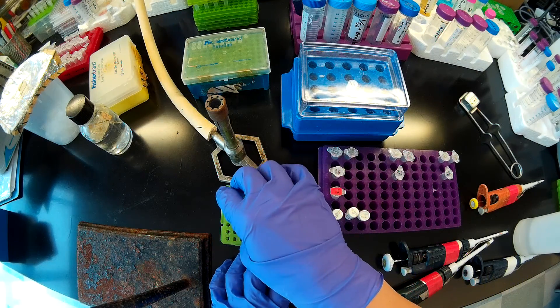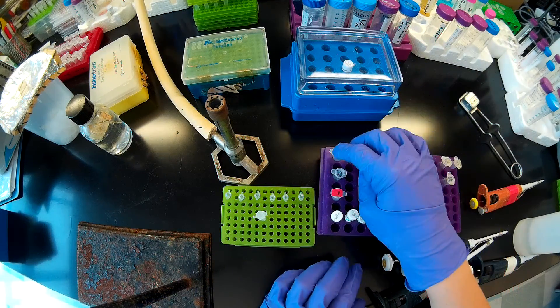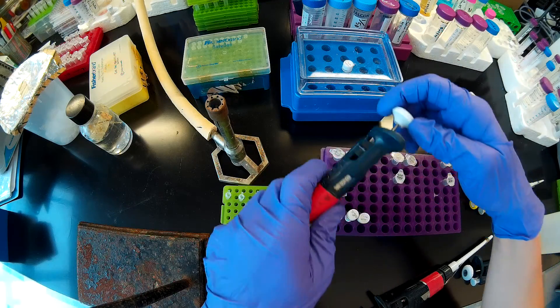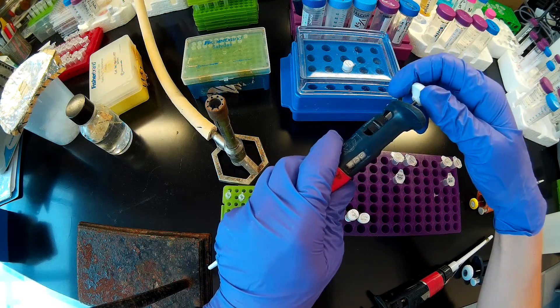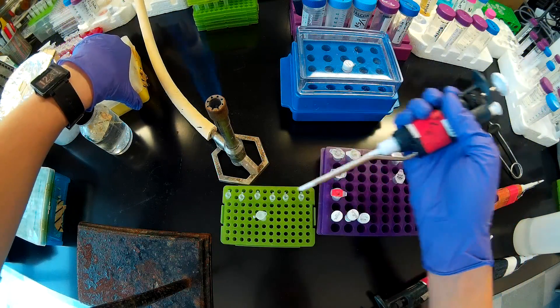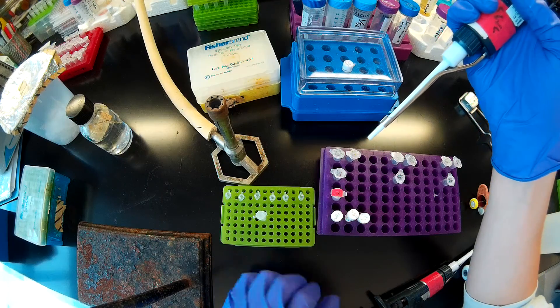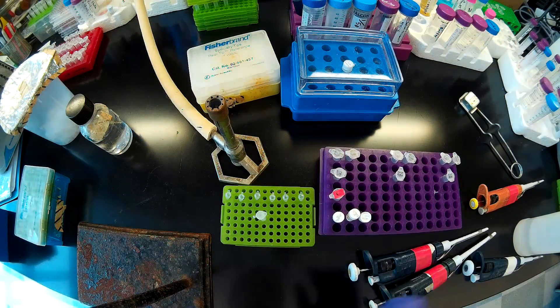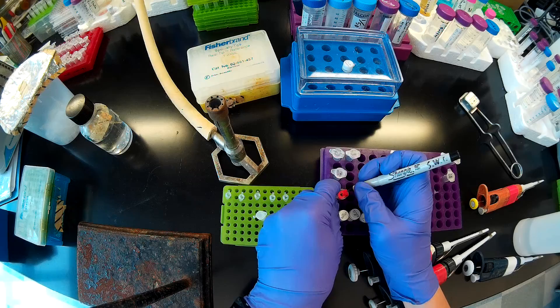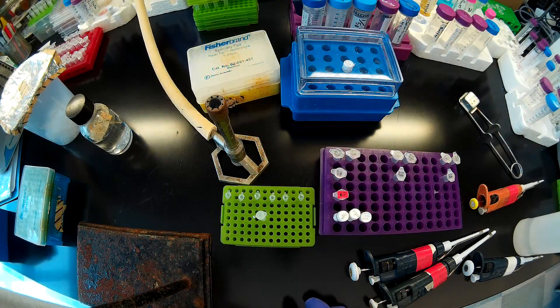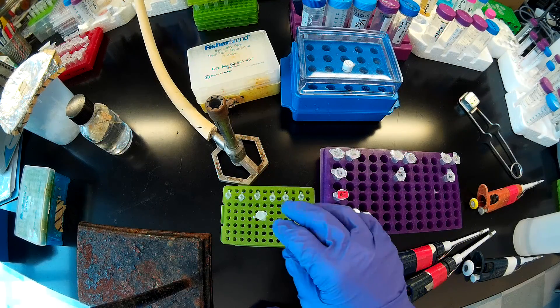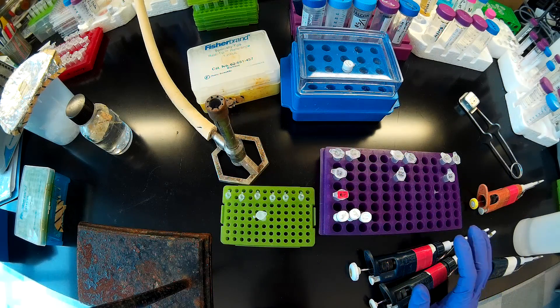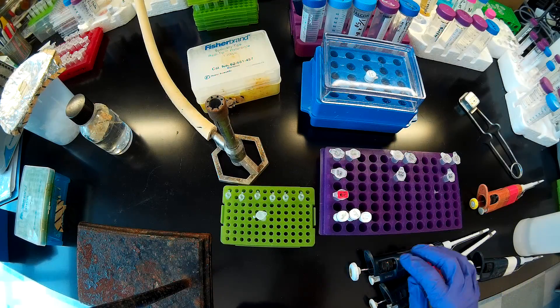Now all I need to add to each tube are the reverse primers and the templates for each reaction. I'm going to go ahead and aliquot out my master mix. I'm going to add 47.5 microliters of my master mix to each tube. The master mix that you prepare is dependent on what PCR reactions you're going to be doing later on.